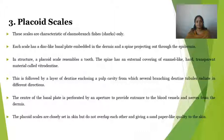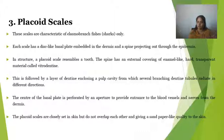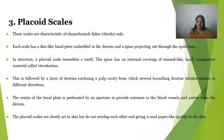In structure, a Placoid scale resembles a tooth — they are homologous organs with a similar basic developmental plan. The spine has an external covering of an enamel-like, hard, transparent material called vitrodentine. This is followed by a layer of dentine, enclosing a pulp cavity from which several branching dentine tubules radiate in different directions. The center of the basal part is perforated by an aperture to allow entry of blood vessels and nerves from the dermis, forming a dermal papilla-like structure present in the pulp cavity.